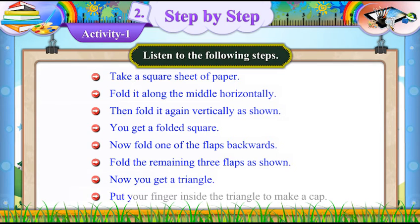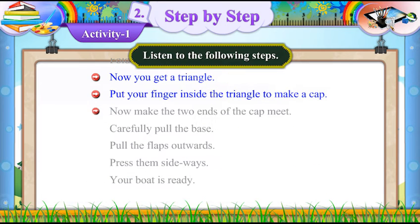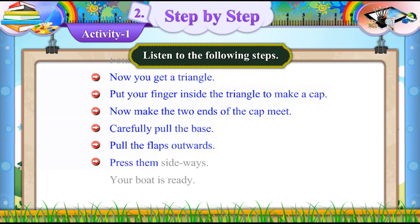Put your finger inside the triangle to make a cap. Now make the two ends of the cap meet and carefully pull the sides. Pull the flaps outwards and press them sideways.